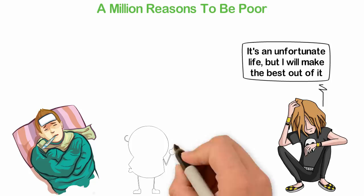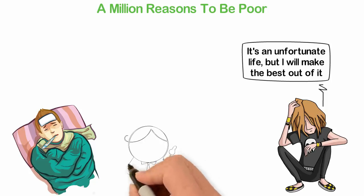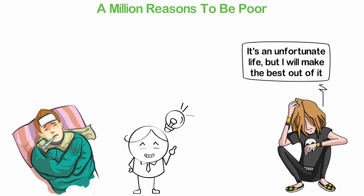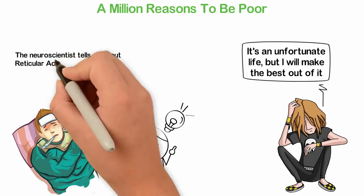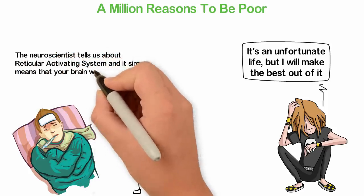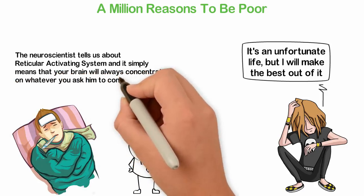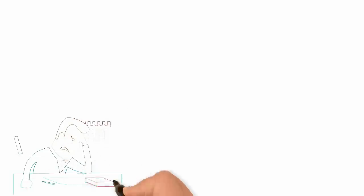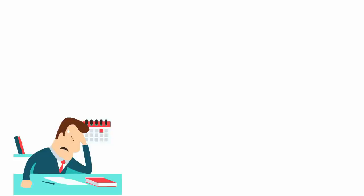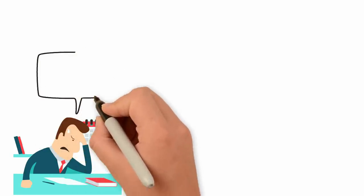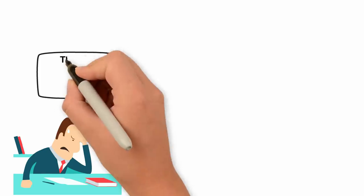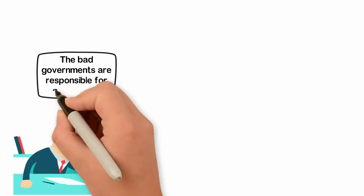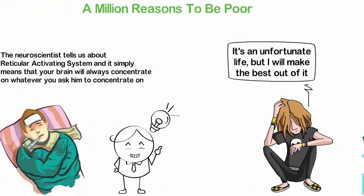Here's the thing. Poor people know a million reasons why they are poor. Rich people know a single reason why they must be rich. It's all about what you decide to focus your attention on. The neuroscientist tells us about reticular activating system and it simply means that your brain will always concentrate on whatever you ask him to concentrate on. Your eyes will always see whatever you ask them to look for. So if you decide to see the reasons why you are poor, that's a simple instruction for your brain. Your brain is so smart that it will look for a million reasons why you are poor. You'll start seeing how the government policies are stopping you, how your employer is evil, how the economy is bad and how everything works against you.